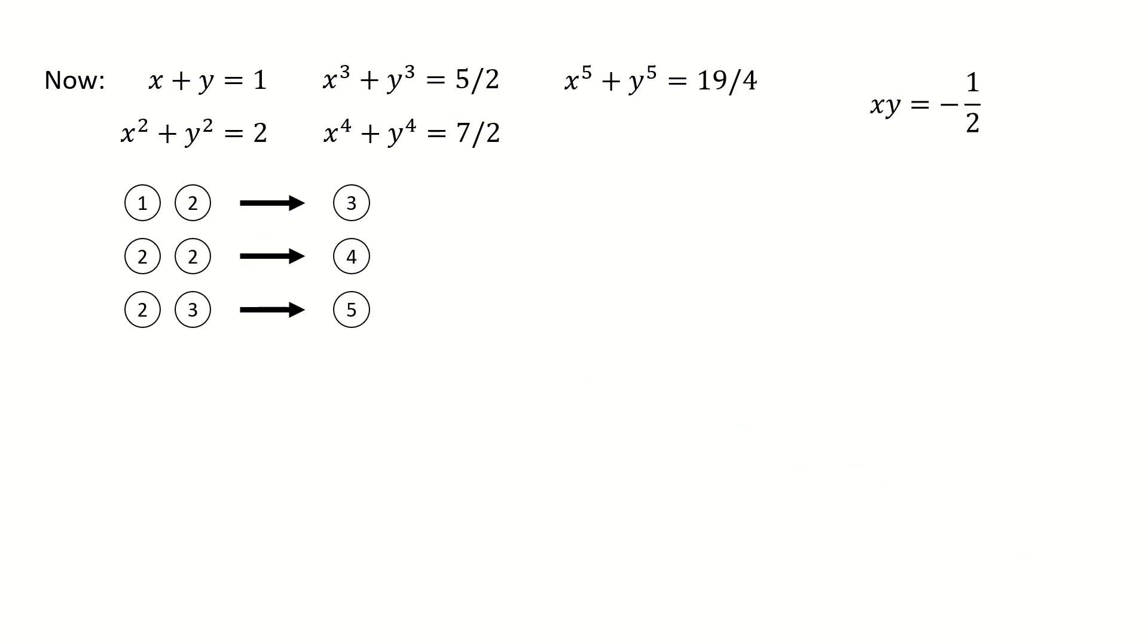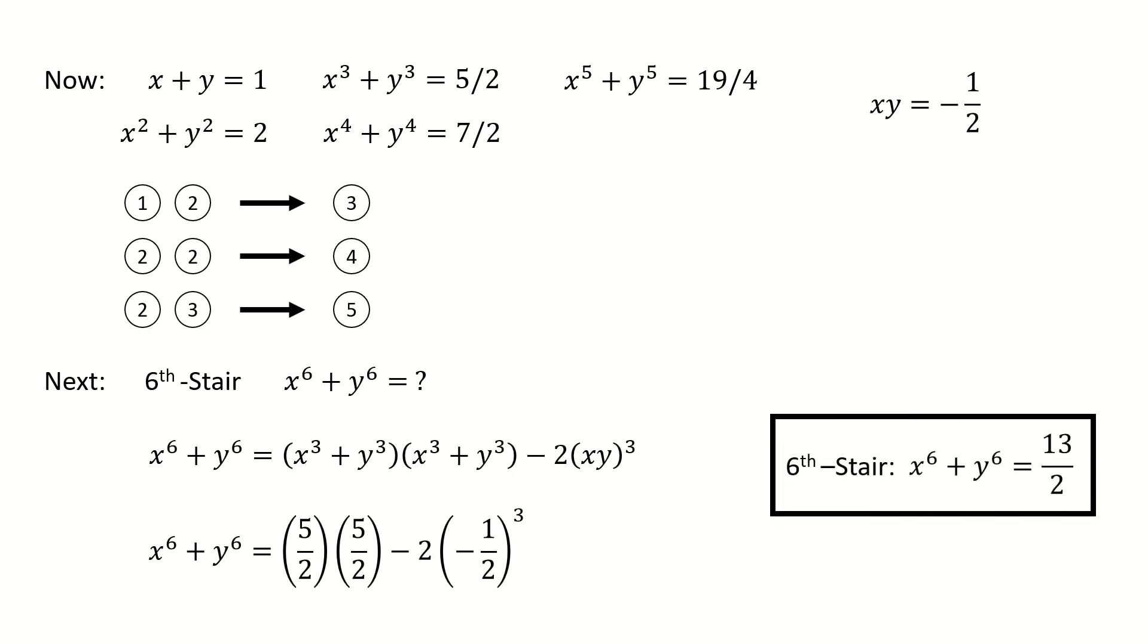So here I summarize results we already got so far. For stair 6, we break down to the product of oval 3. Follow the same procedure. We got oval 6 is 13 divided by 2.